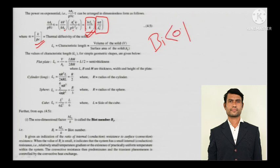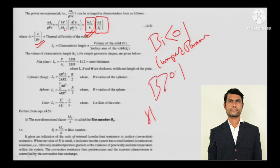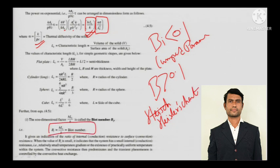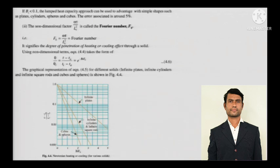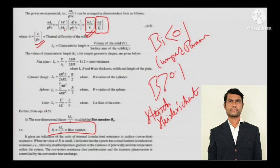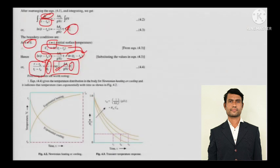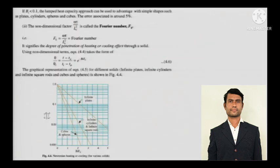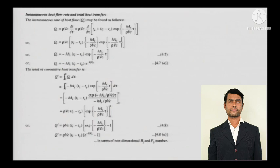The Biot number is the deciding criterion: when Bi < 0.1, use the lumped parameter formula; when Bi > 0.1, use the graphical Heisler's chart. The term ατ/L² is a dimensionless number called the Fourier number. Therefore, the temperature equation can also be written as: (T - Ta)/(Ti - Ta) = exp[-(Biot number × Fourier number)].